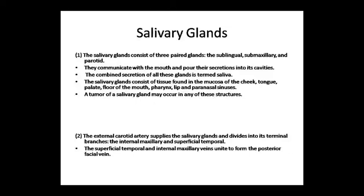The salivary glands include three types: sublingual, submaxillary, and parotid. They communicate secretion - called saliva - to the oral cavity. Salivary glands are found in the mucosa of the cheek, tongue, palate, mouth floor, pharynx, lip, and paranasal sinuses. Tumors of the salivary gland can occur in any of these structures.